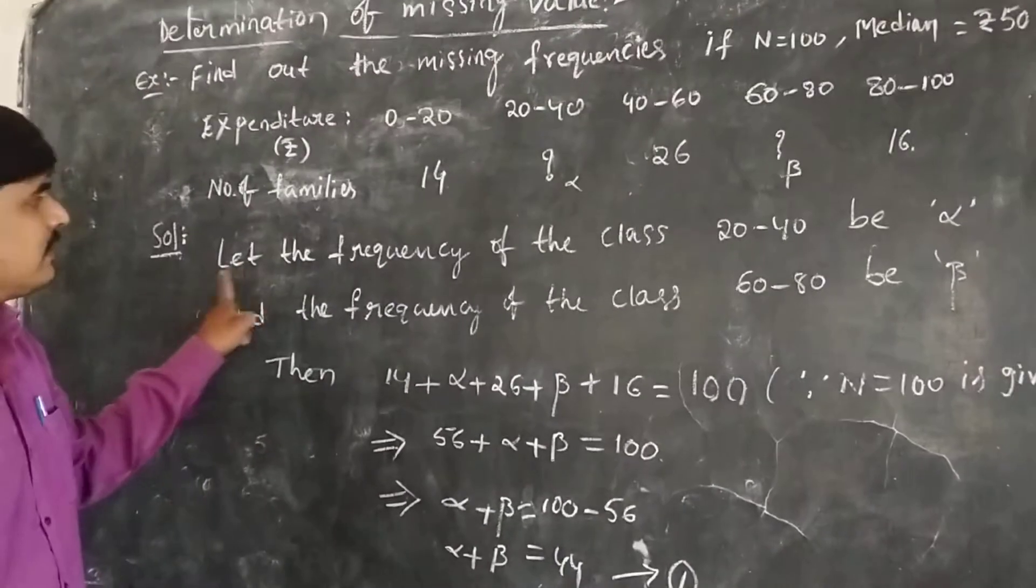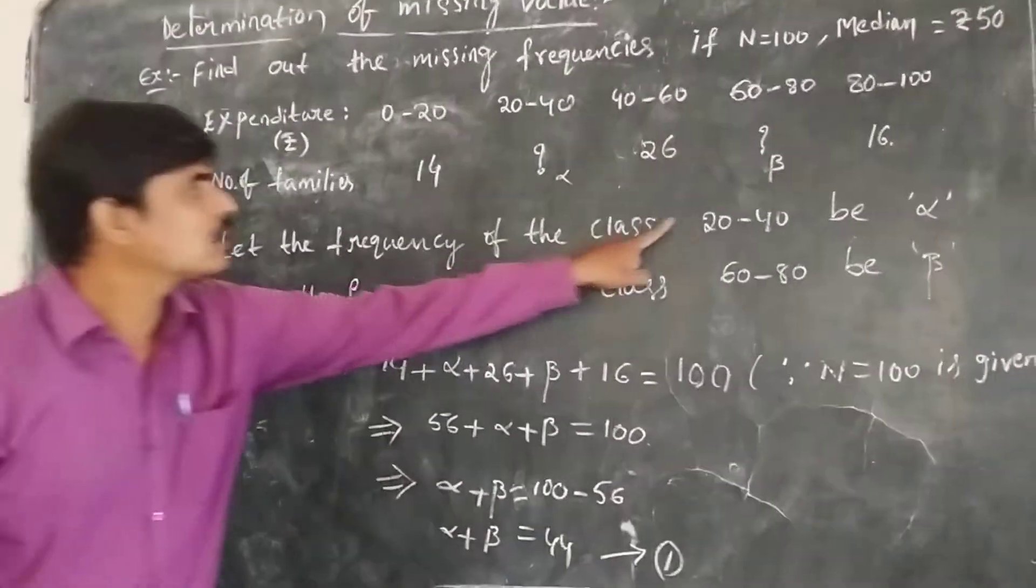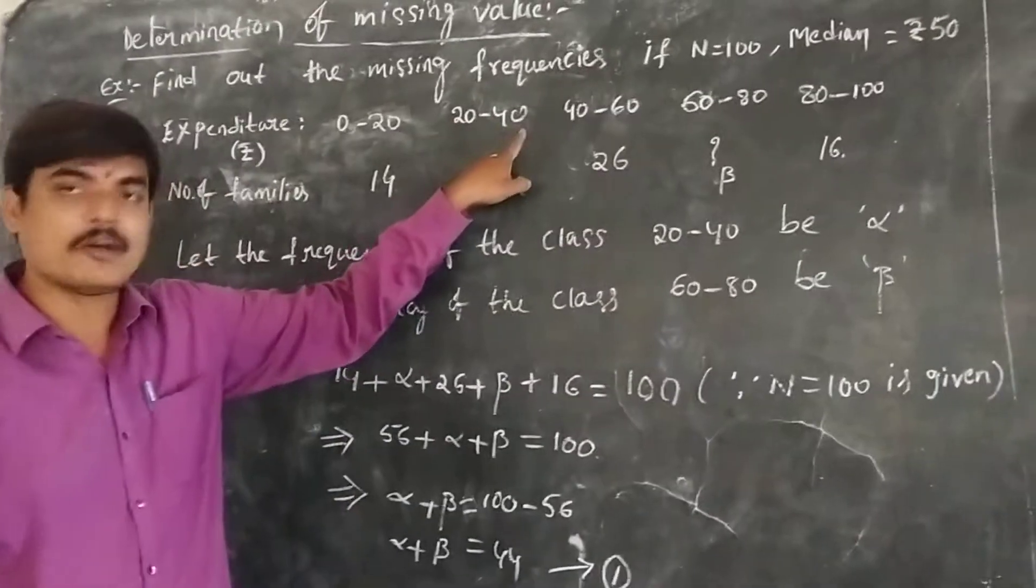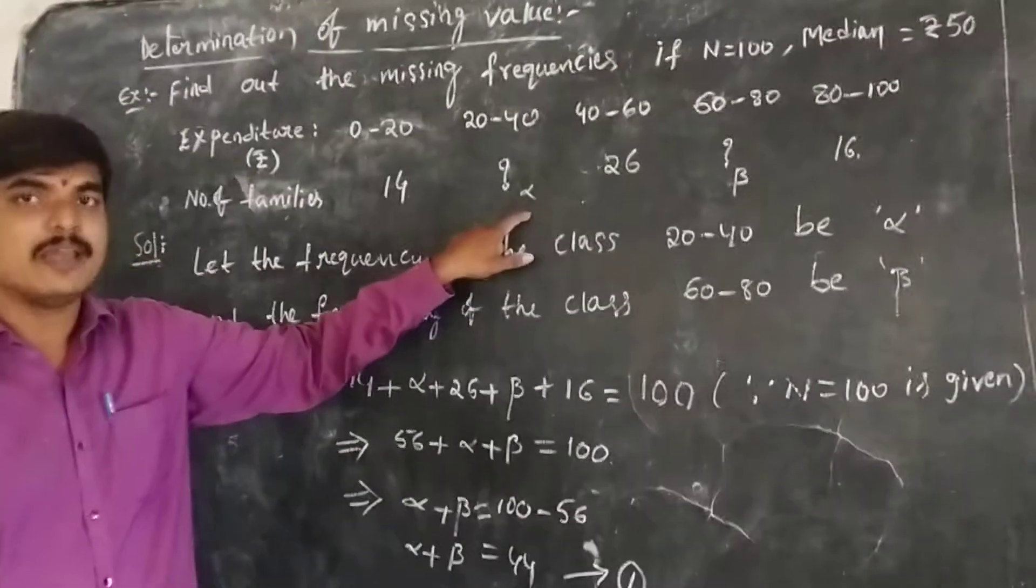Let the frequency of the class 20 to 40 be alpha and the frequency of the class 60 to 80 be beta.